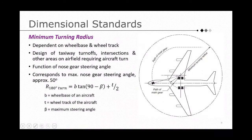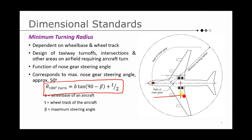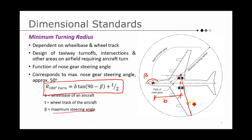In this video we will see the minimum turning radius — the derivation of this formula and what all things are involved. This is the nose gear, and this is the intersecting point of the main gear and the center line, which is your wheelbase, denoted by b. The aircraft is trying to steer at an angle of beta, which is the maximum steering angle. The minimum turning radius is the distance from this center point to the farthest wing tip.